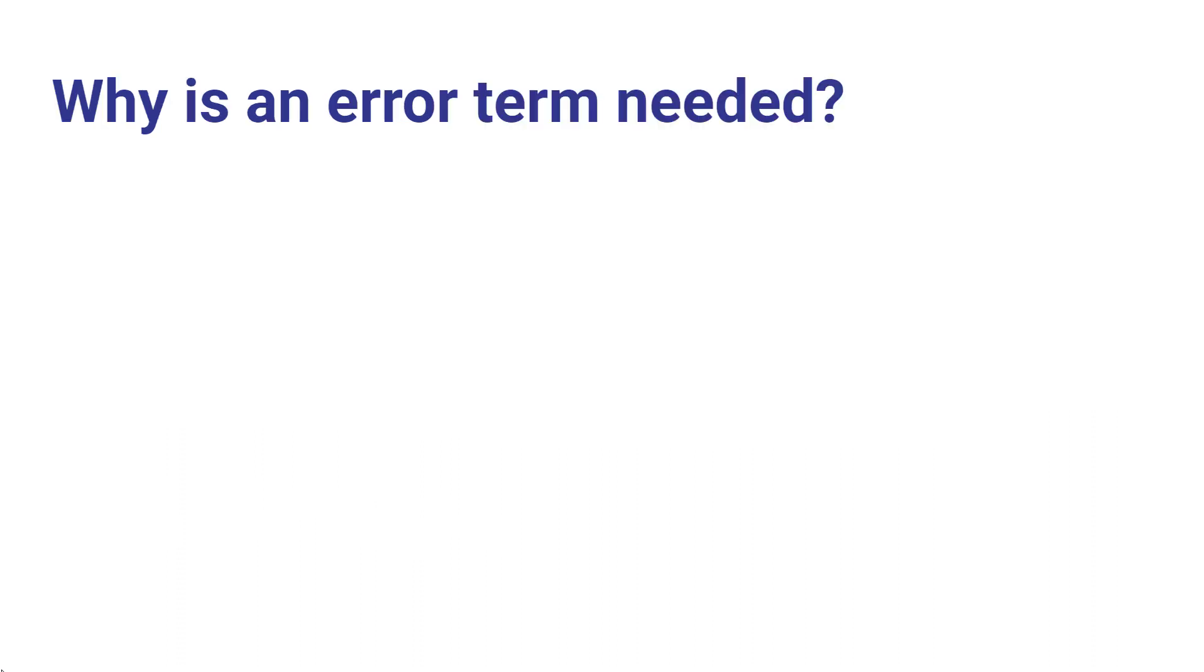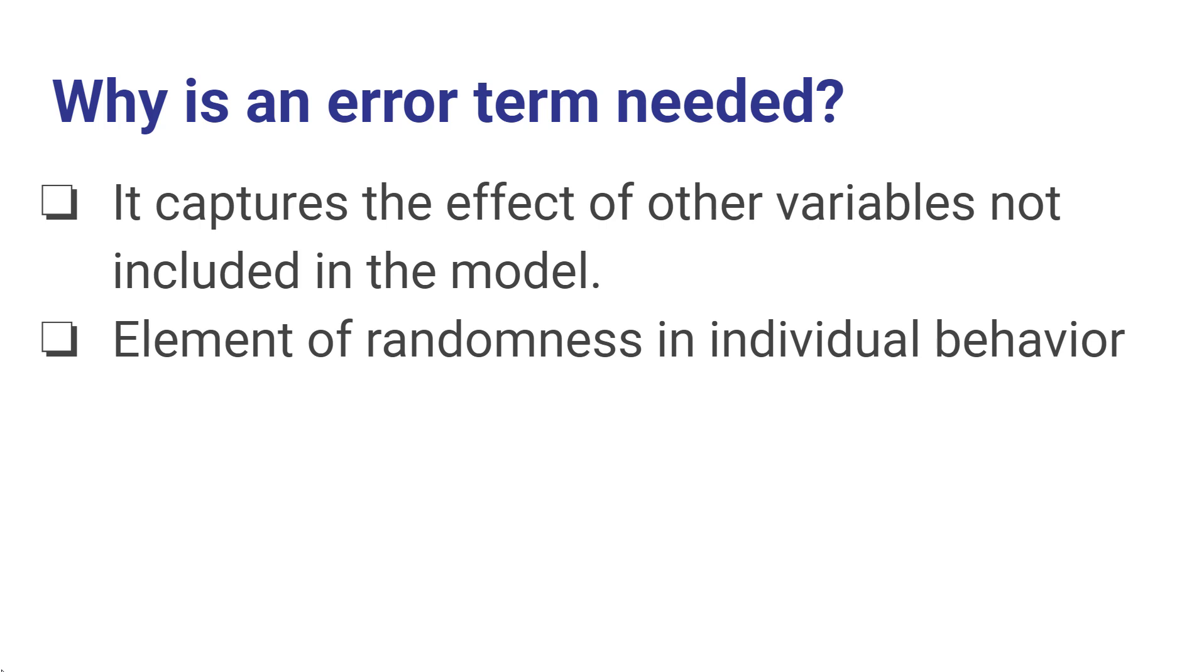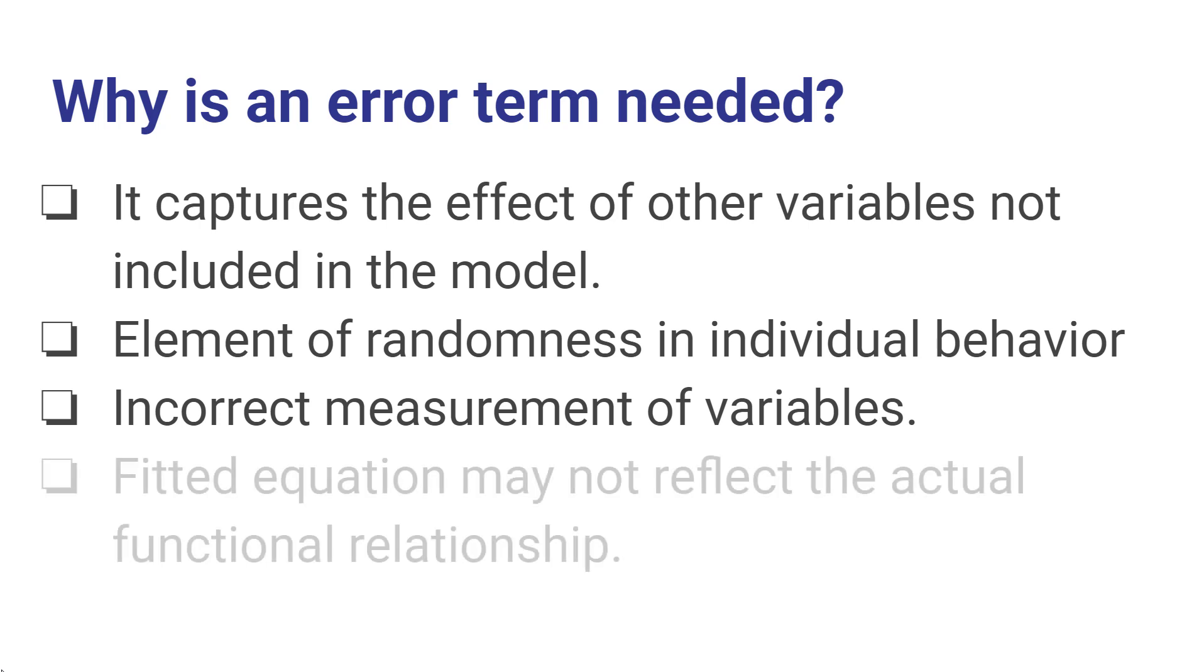In any model that we're going to work with, an error term is going to always be needed. And let's just talk briefly about some of the reasons why that occurs. One is that no matter how elaborate your model, there's always going to be some factors that you haven't included. So one reason for the existence of the error term is that it's capturing things that we either have not observed or in some cases things that we cannot observe. Also, people don't always behave in exactly the same way, that there's some degree of randomness in how people make choices. Furthermore, when we gather data, some of the data may be measured incorrectly. When people fill out surveys, sometimes they answer questions that are not the questions on the paper. The equation that we fit may not reflect the actual functional relationship between the two variables. We might assume a linear model when the true model is quadratic or logarithmic or some other type of relationship.